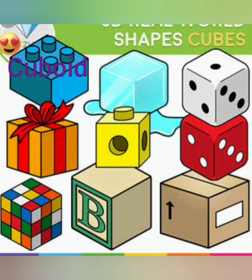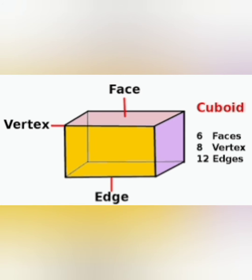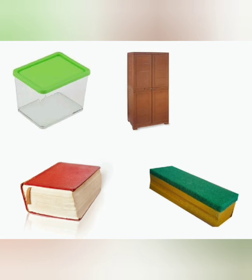Coming to the cuboid. A cuboid has six flat faces. See how the cuboid is made — it is made with rectangles, so we cannot say that it has equal faces. A cuboid has 12 edges and 8 corners.